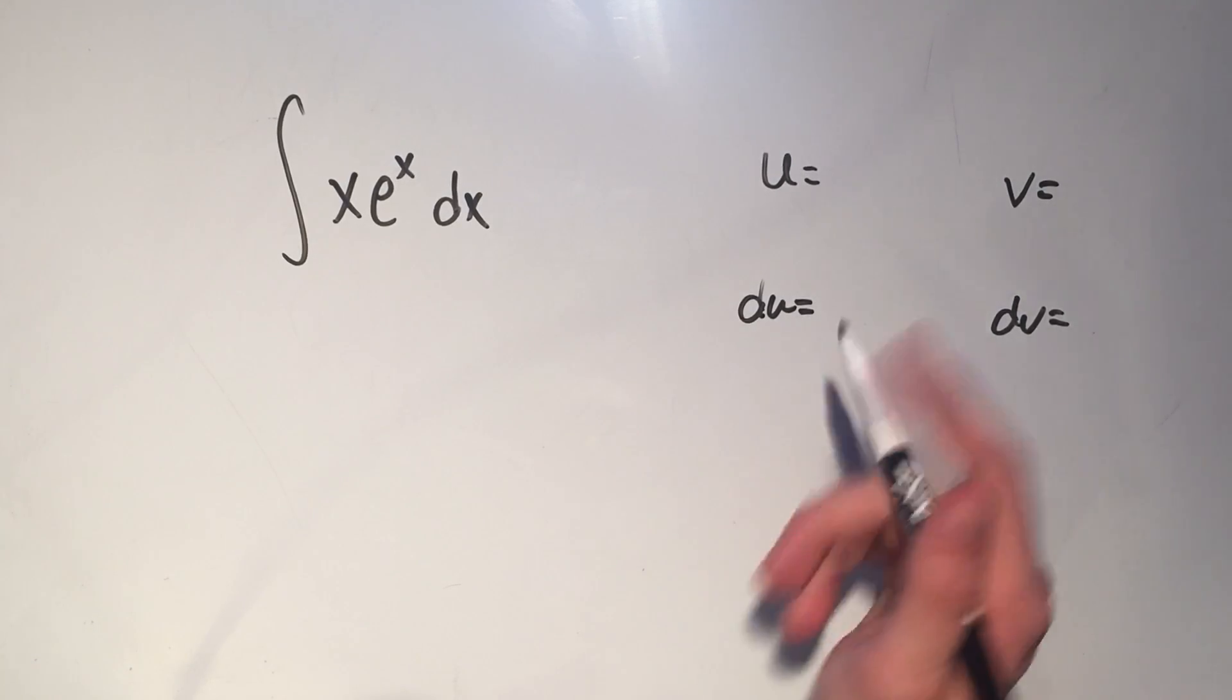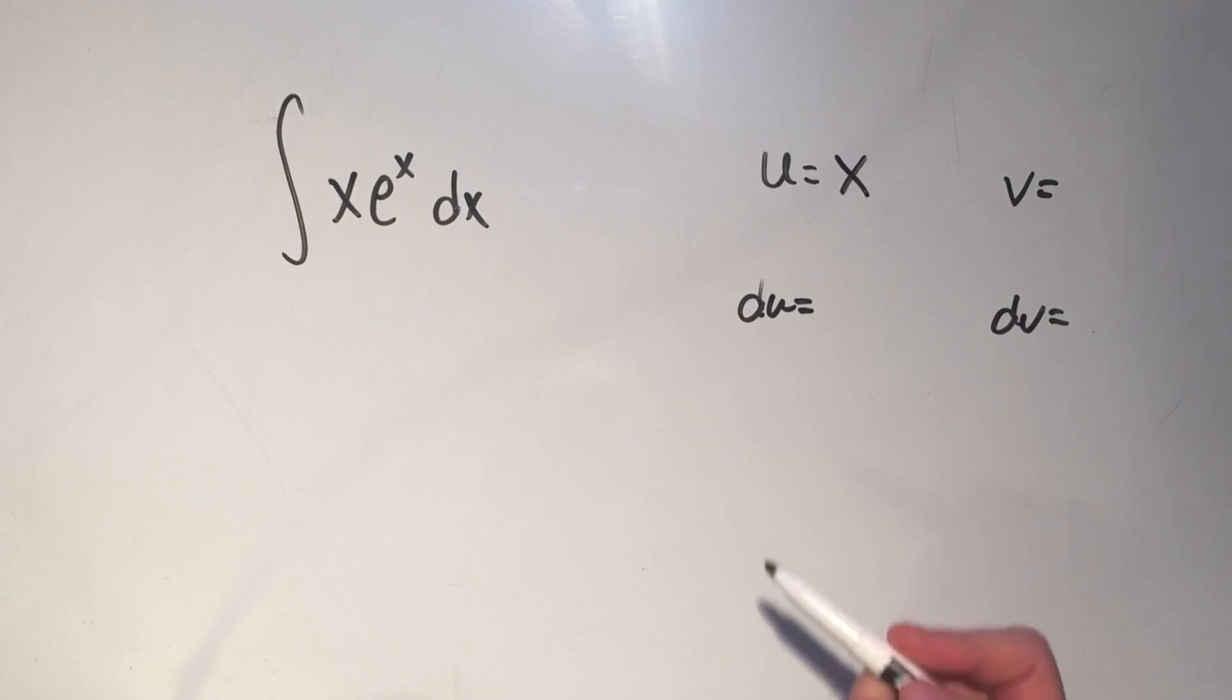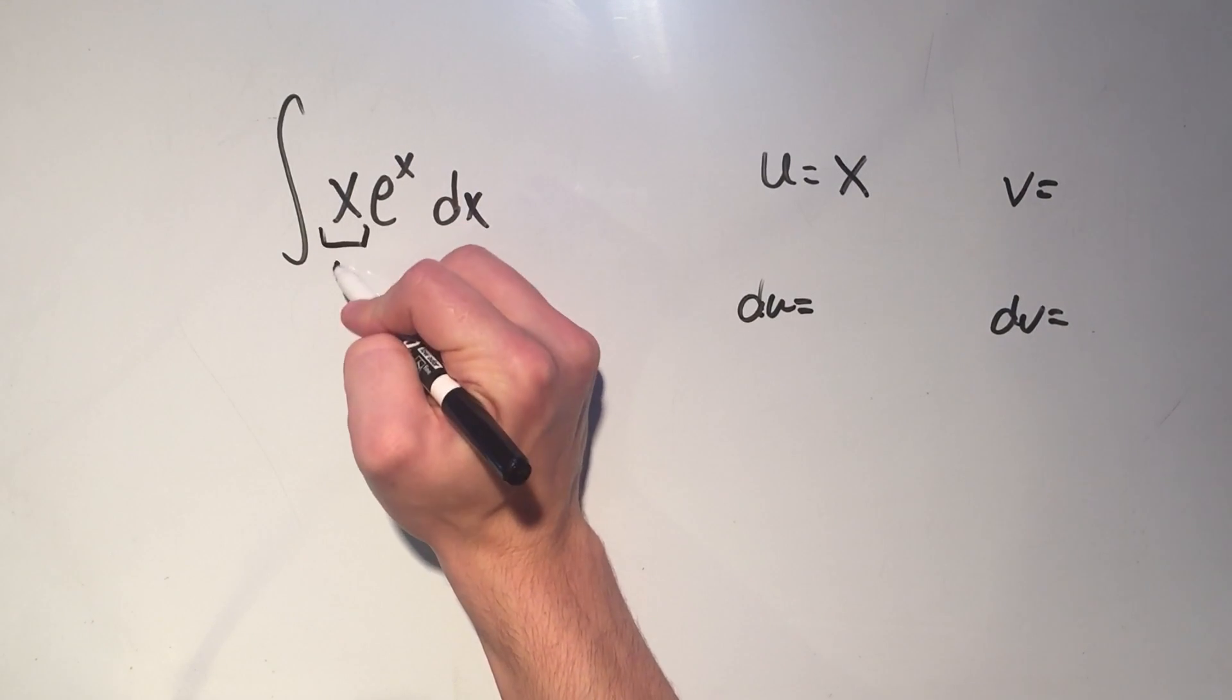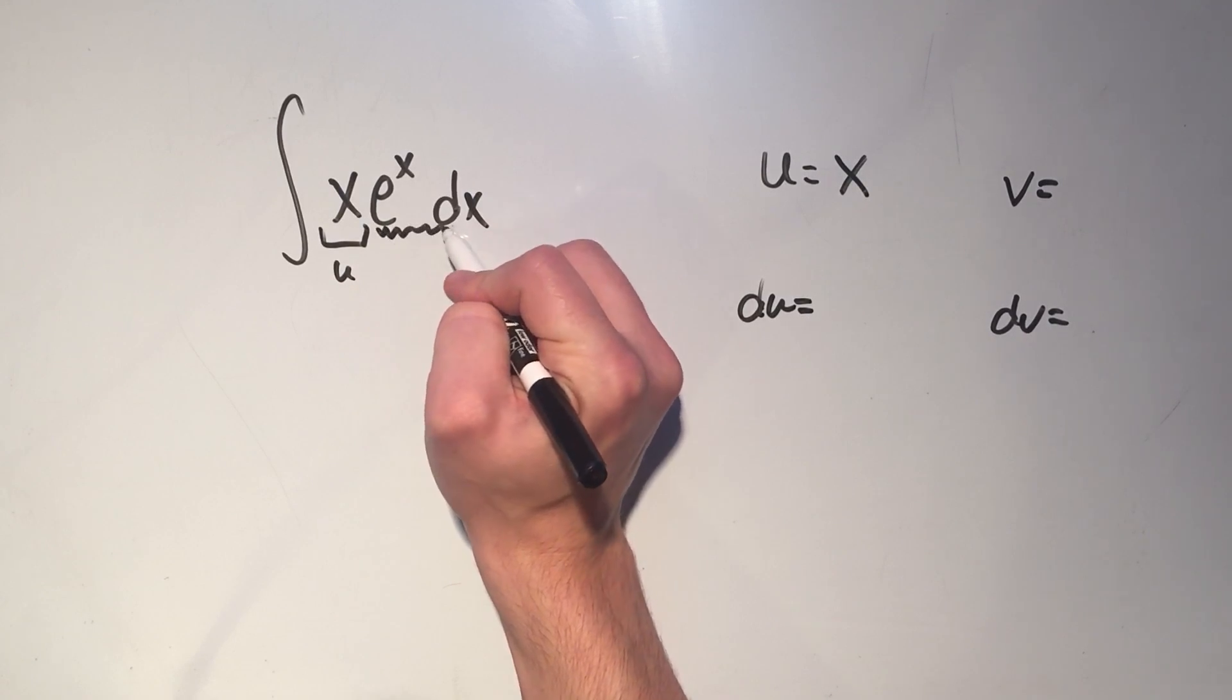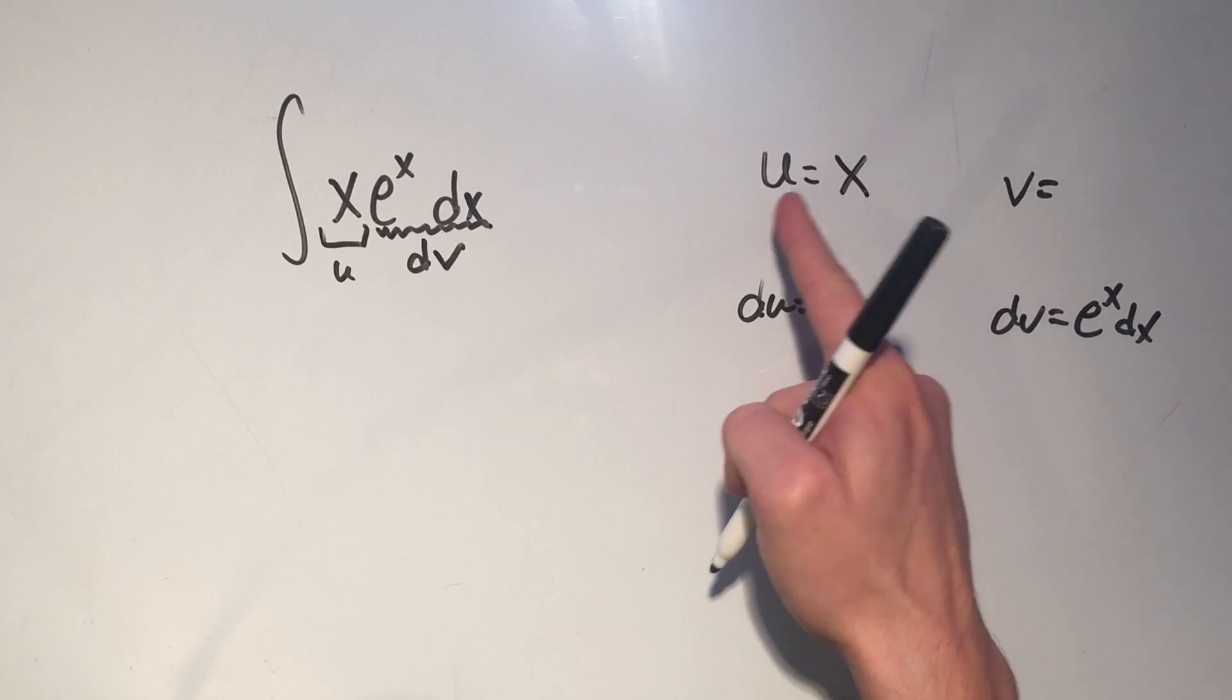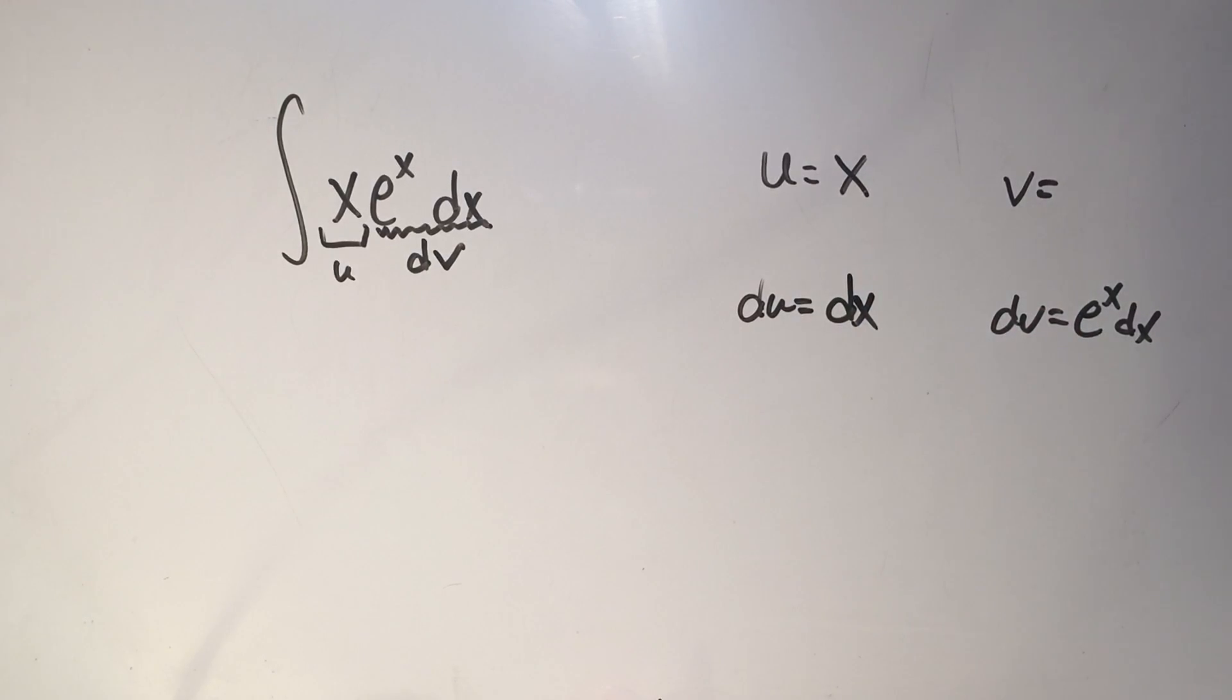So you want to pick u to make the problem simple, and that's how I know I need to pick my u to be x and my dv to be e to the x dx. And that's simply because if u is x, that means du is dx, and I'm simplifying things.